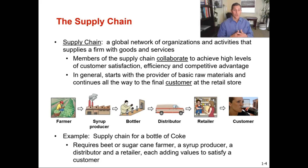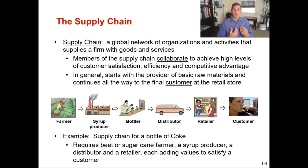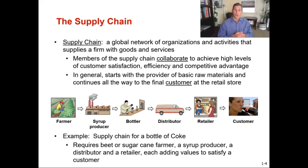Whether it's a toilet paper shortage, a car shortage, or a lumber shortage, we are seeing how delicate our supply chains are and how the domino effect — if something goes wrong within the supply chain — affects other industries as well. As a supply chain professional, although it was an unintended consequence of the coronavirus pandemic, people now have a major spotlight on supply chain and how critical it is to reducing expenses and keeping products on the shelves.